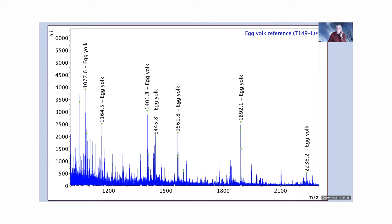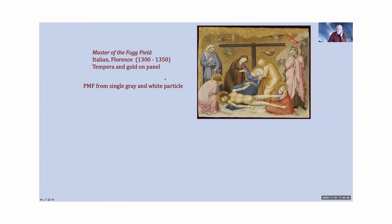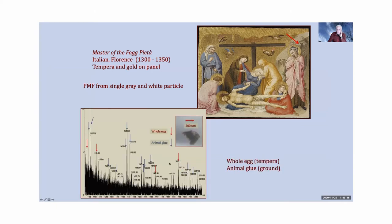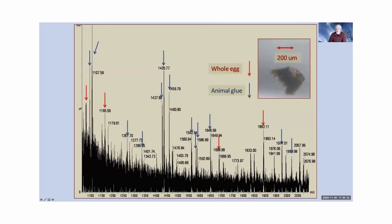As an example, a 14th-century tempera painting from the Harvard Art Museums: a very small particle from the upper corner was analyzed by peptide mass fingerprinting. The spectrum illustrates that we can detect whole egg — identifying ions associated with both egg white and egg yolk — and also the presence of animal glue based on ions associated with animal collagen.